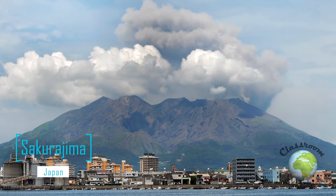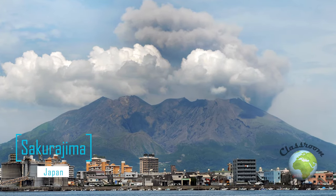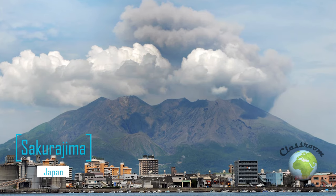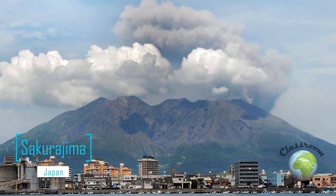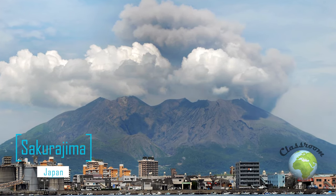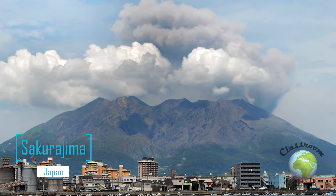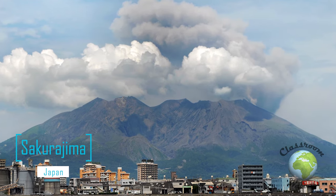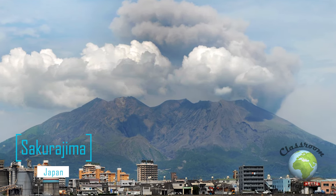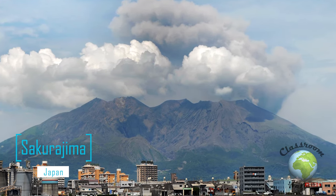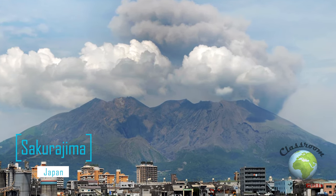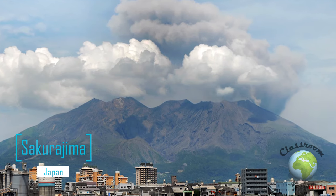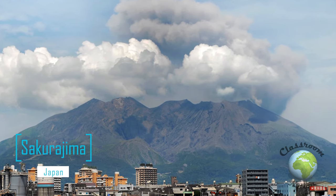Dormant volcanoes have been in a state of sleep or dormancy for a very long time, usually at least 2,000 years. However, dormant volcanoes are still not extinct, and hence they might erupt at any time. An example of a dormant volcano is Sakurajima in Japan.